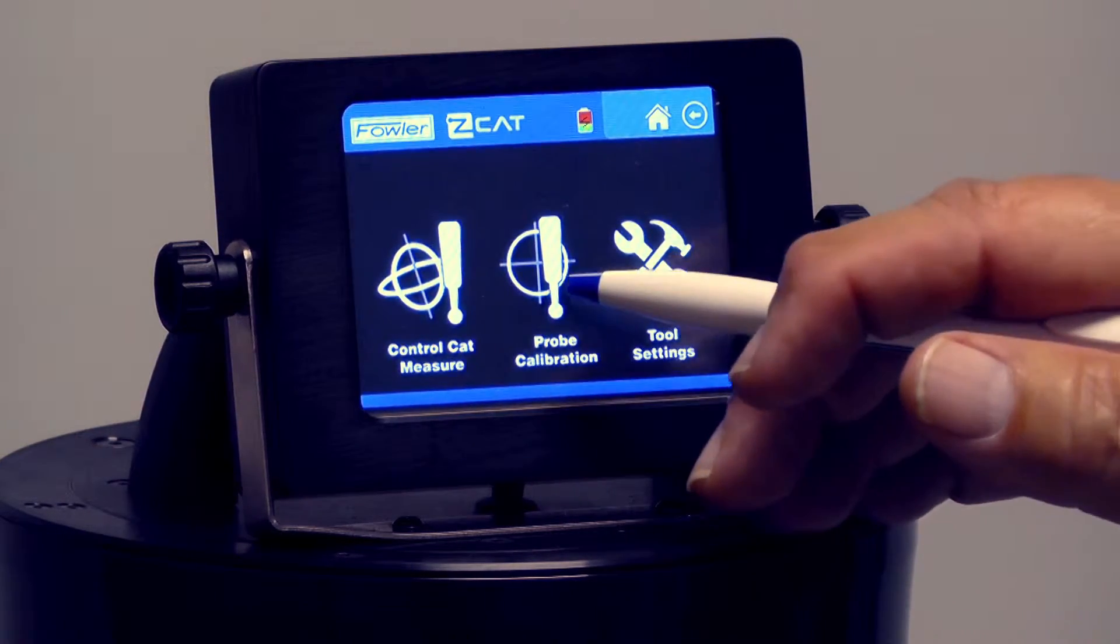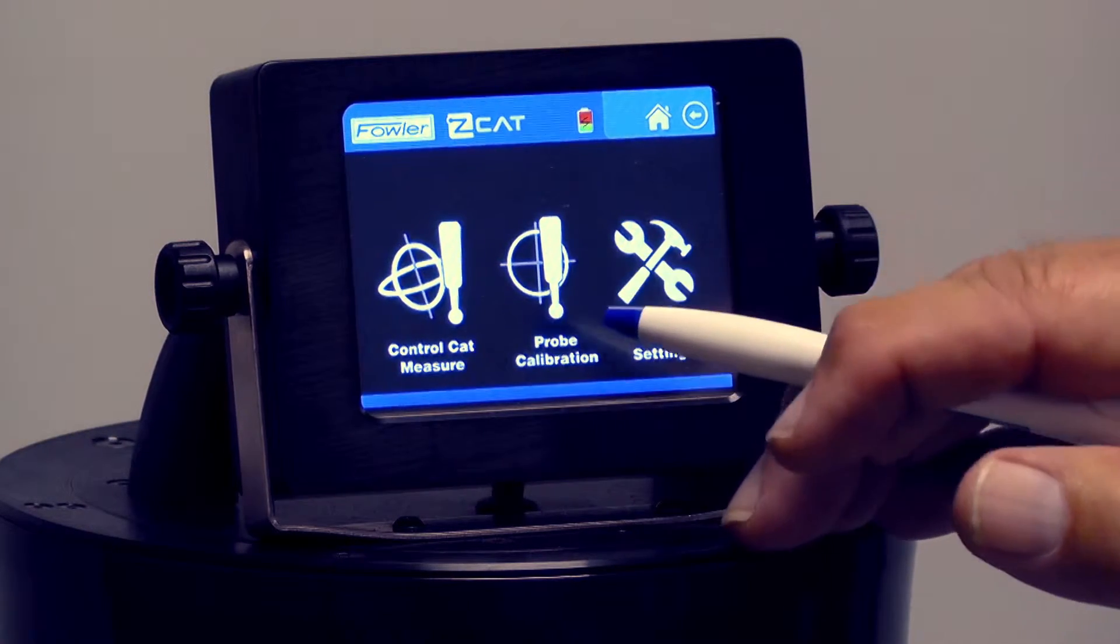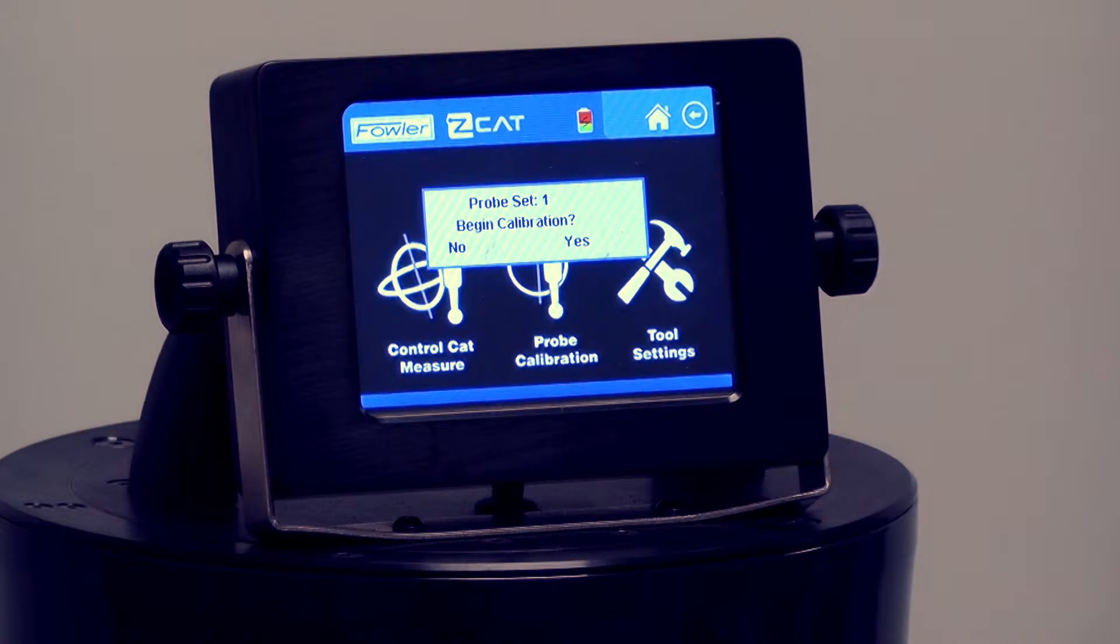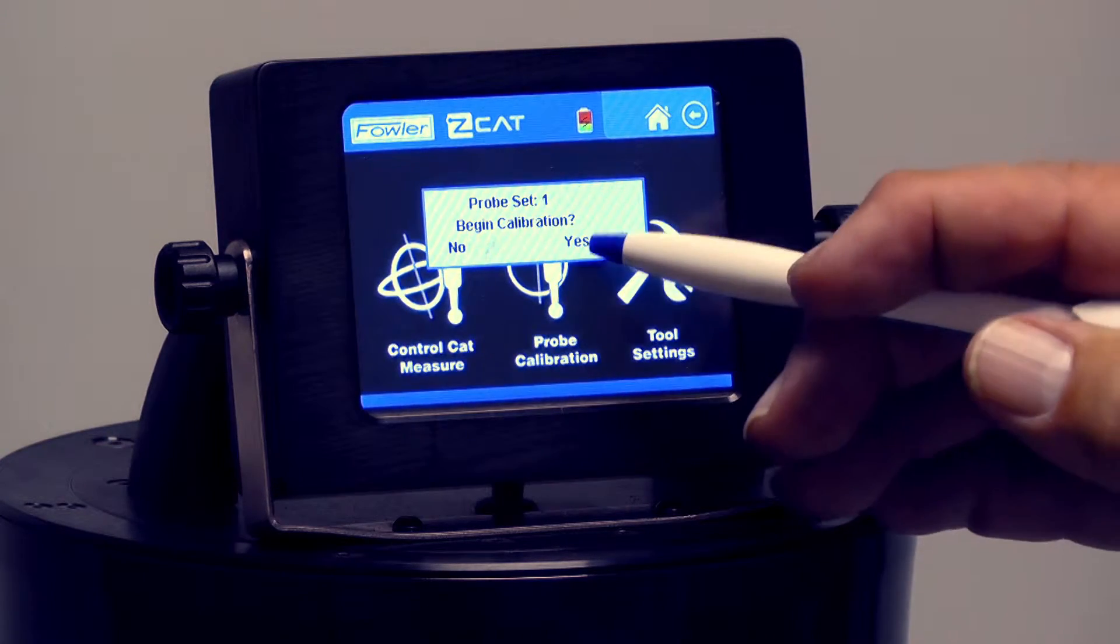If I hit the back button, it'll go back to my screen again, where those three options, probe calibration being the next one, so I'll touch that one. It says probe set number one, which is the one we're using right here. Begin calibration, yes or no, and if I hit yes...